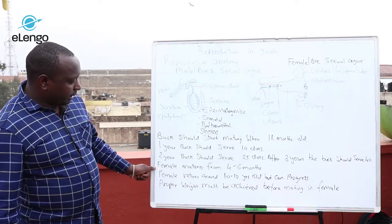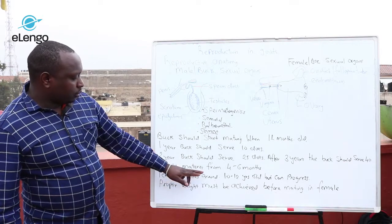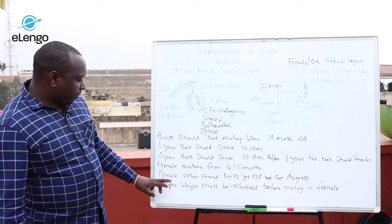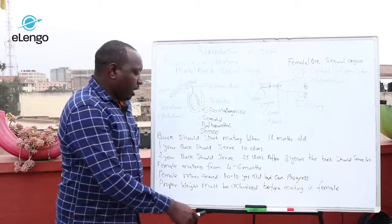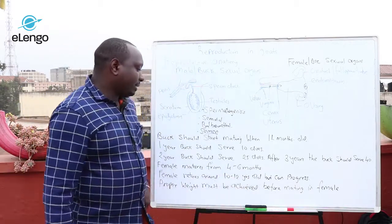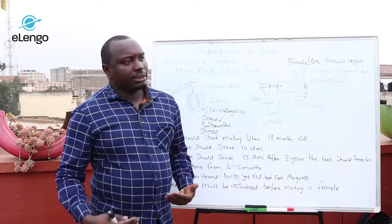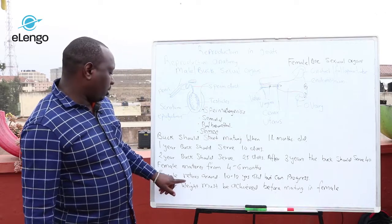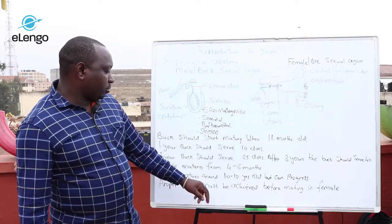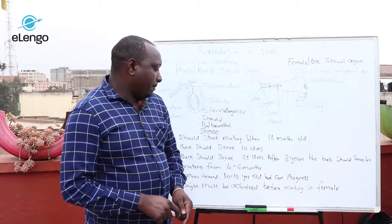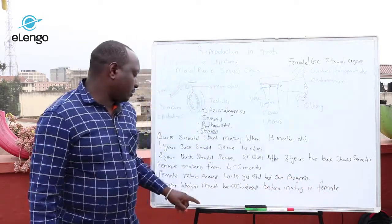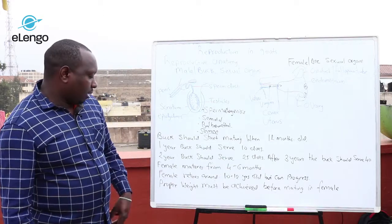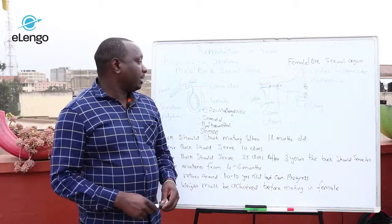For the female or the doe, it matures from four to six months. The female retires around 10 to 12 years old, but this can proceed depending on the quality of the feed and the health of the female or doe. Proper weight must also be achieved before mating of the female, and this has to be done with a nutritious or balanced diet when feeding your female doe.